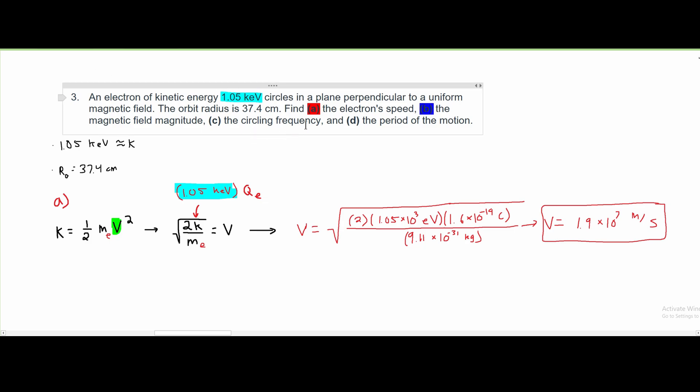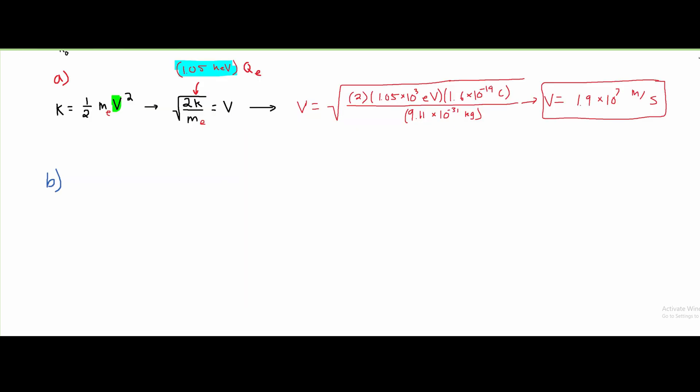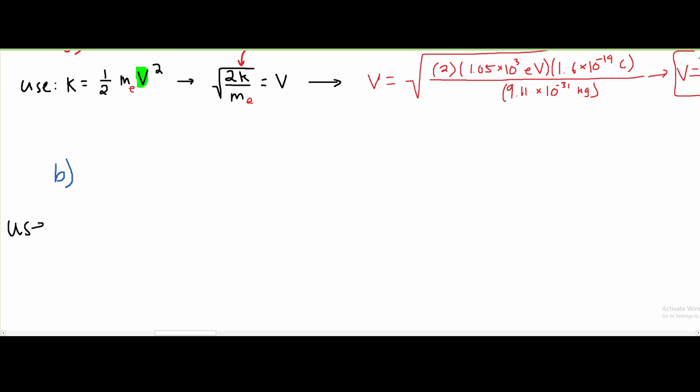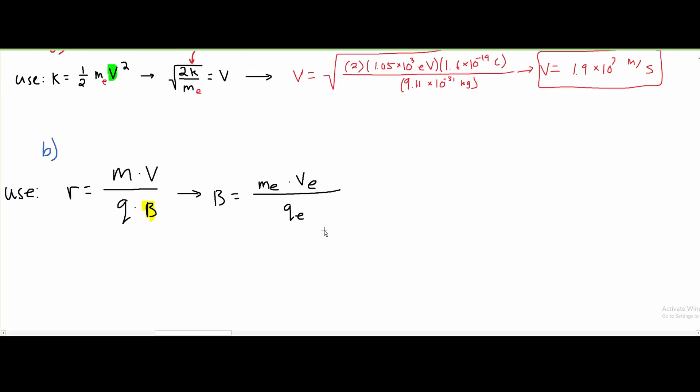Part B, we're asked to find the magnetic field magnitude. This means we're going to be finding B. To do this, we can use this following formula, which is r, the radius, equals the mass times velocity divided by charge times B. Well, we want to find this B value right here. After we move everything over, we're going to have the mass of an electron times the velocity of an electron divided by the charge of an electron times r.